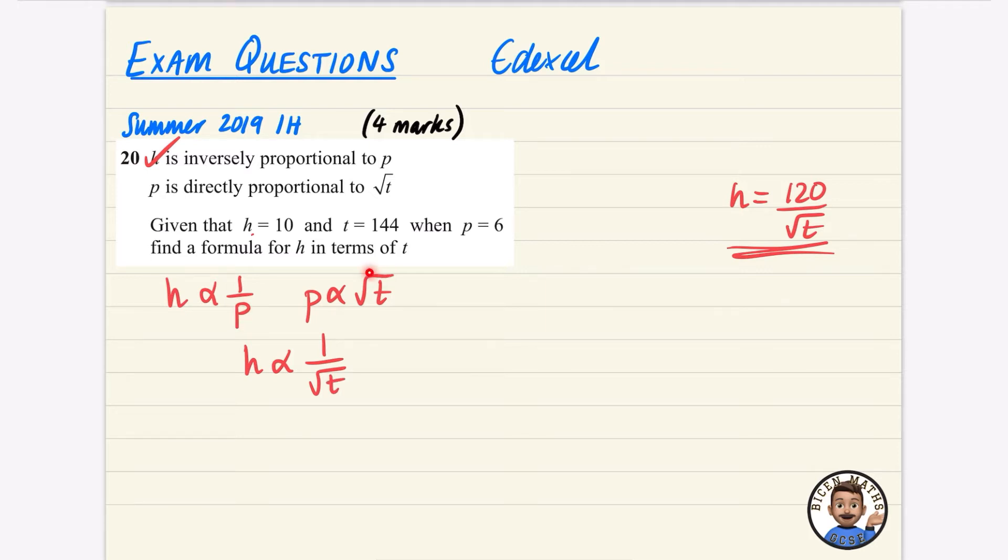Because if P is proportional to T, then I could replace this P with root T, because they're directly proportional to each other. So I was able to kind of take that P and replace it with root T, meaning that H is just equal to K over root T. And I can completely ignore the fact that P is equal to 6.